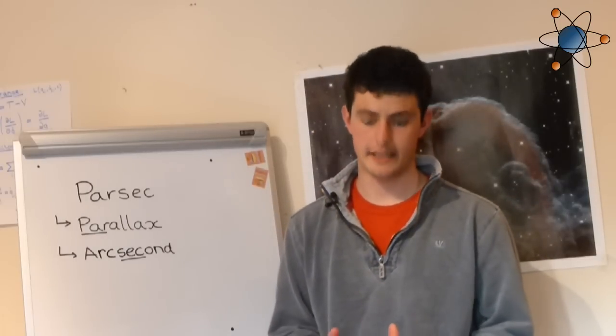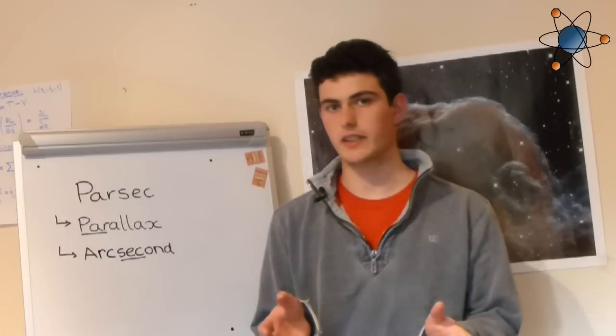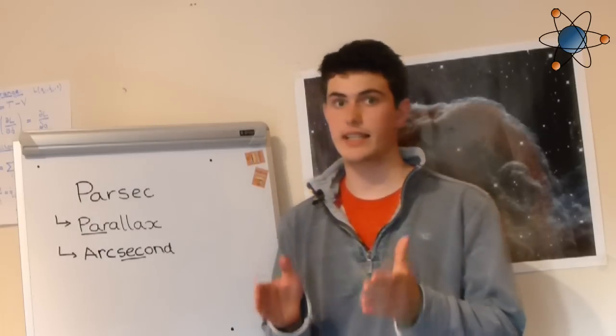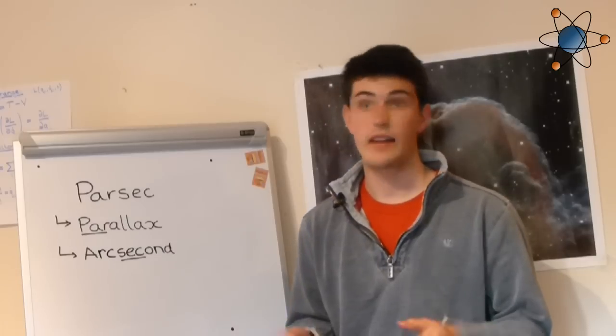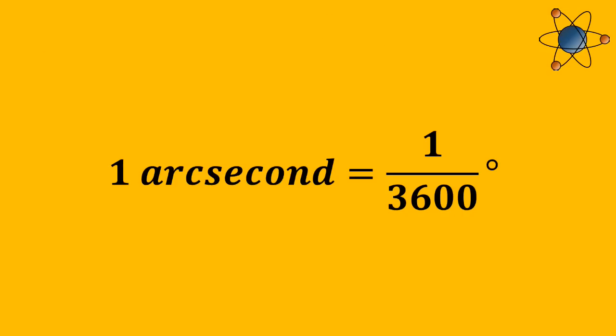Now an arc second is a very small angle. There are 360 degrees in a full circle and each degree is divided into 60 arc minutes, and then each arc minute is divided into 60 arc seconds. So an arc second is 1/3,600th of a degree.